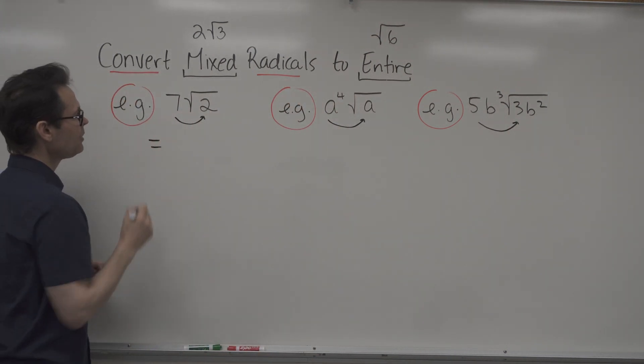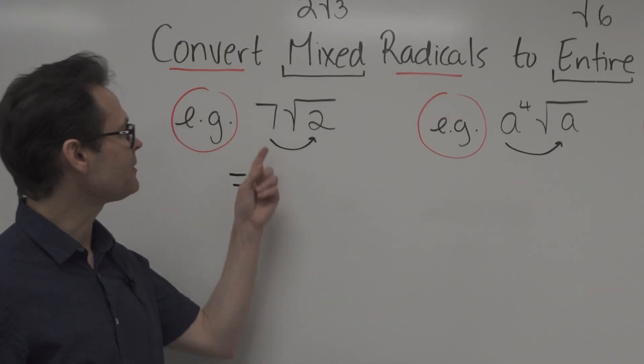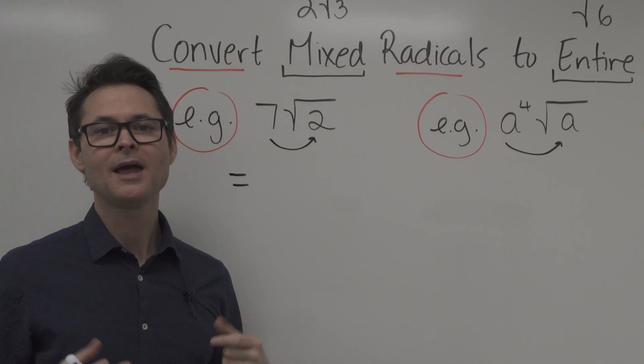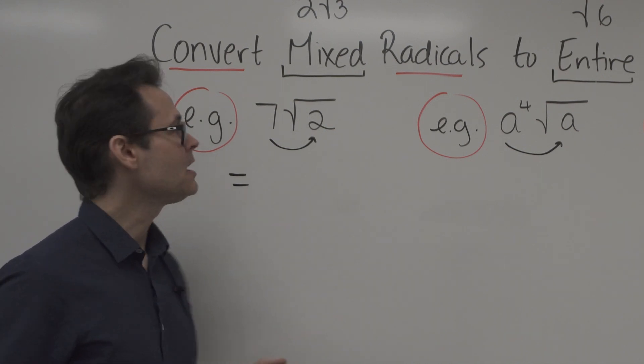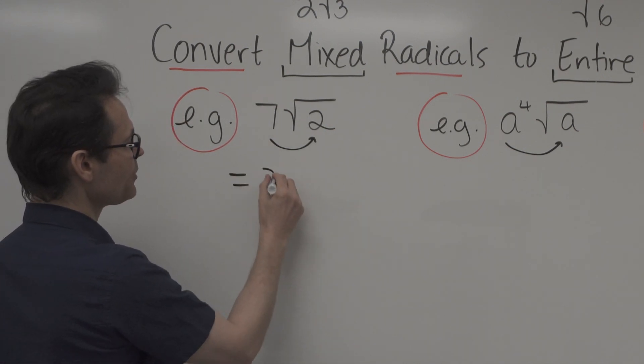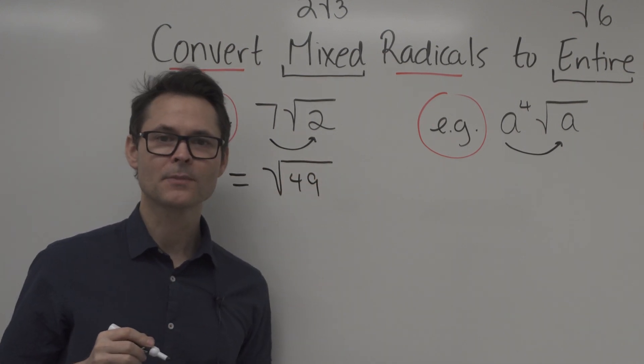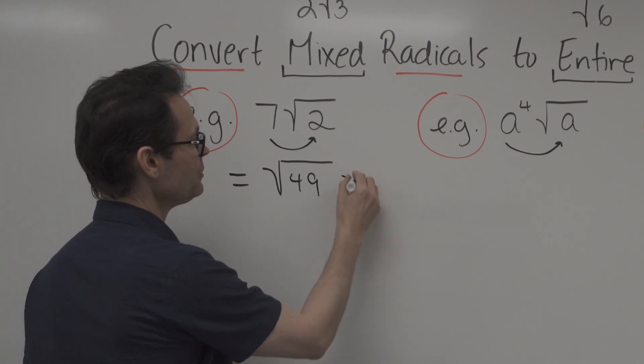To do that, it's pretty simple. All we have to do is rethink these coefficients, these numbers that are outside the radical, as radicals themselves. So I know that 7 can be written as the square root of 49. And then, of course, root 2 is just root 2.